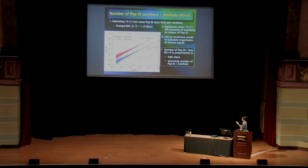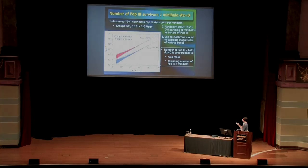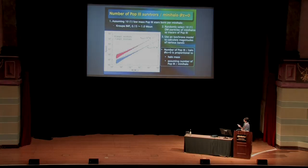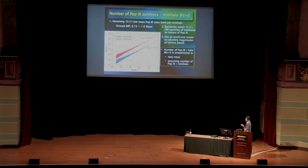After this procedure, we have listed all Pop 3-forming mini-halos. Next, we assume 10 or 1 low-mass Population 3 stars formed per mini-halo with a Kroupa IMF, with masses from 0.15 to 1 solar mass. We then randomly select 10 or 1 dark matter particles of each mini-halo as tracers of the Pop 3 stars. The spatial position of those dark matter particles at redshift 0 gives the position of Pop 3 survivors at redshift 0. Magnitudes in various bands are then calculated using an isochrone model.